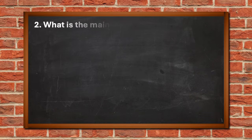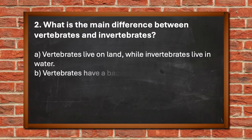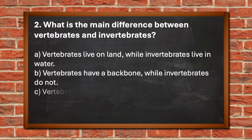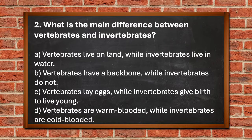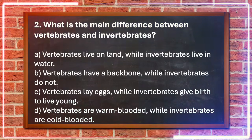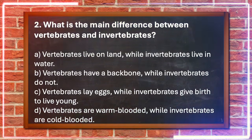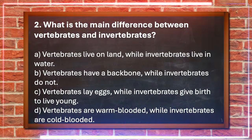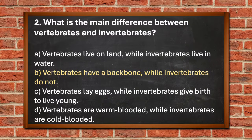Number two. What is the main difference between vertebrates and invertebrates? A. Vertebrates live on land while invertebrates live in water, B. Vertebrates have a backbone while invertebrates do not, C. Vertebrates lay eggs while invertebrates give birth to live young, D. Vertebrates are warm-blooded while invertebrates are cold-blooded. The answer is B. Vertebrates have a backbone while invertebrates do not.